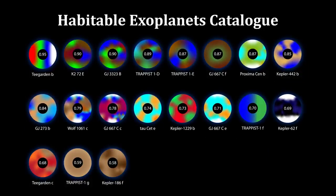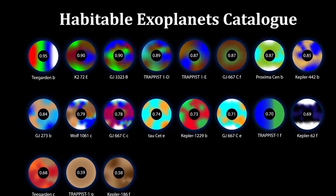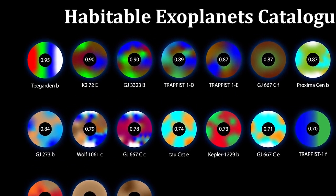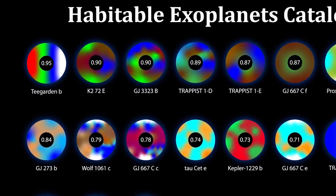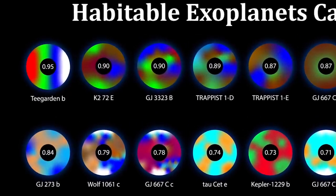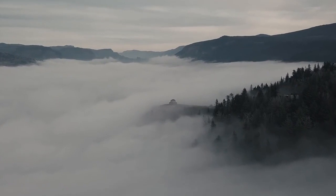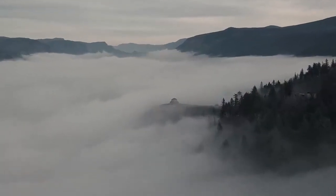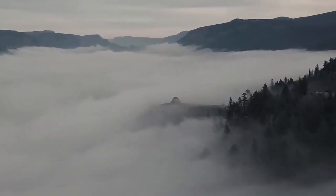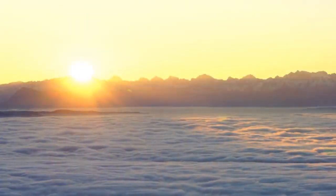It has an Earth Similarity Index of 0.95, which uses characteristics such as mass, radius, and the behavior of its star. Based on these characteristics, it's essentially 95% similar to Earth. It's important to state, however, that this does not mean it has a 95% chance of habitability, as the Index does not take into account other important factors such as the behavior of its atmosphere.